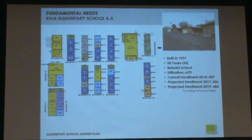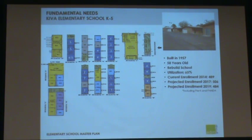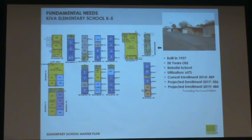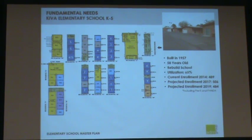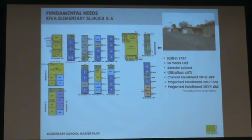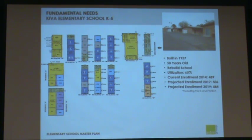Kiva Elementary was built in 1957 — another older school at 58 years old. Because of the age of the school, the asbestos that's in there, and the high cost of energy, it could be a candidate to rebuild. Utilization is 65%. Current enrollment for November 2014 is 489. Projected enrollment for 2017 from Applied Economics is 506, and for 2019 is 504.